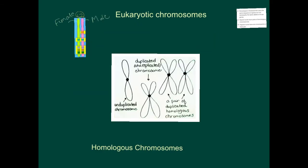Let's now understand the difference between a duplicated chromosome versus homologous chromosomes. Students often get confused about what exactly sister chromatids are versus homologous chromosomes — let's get a clear idea.